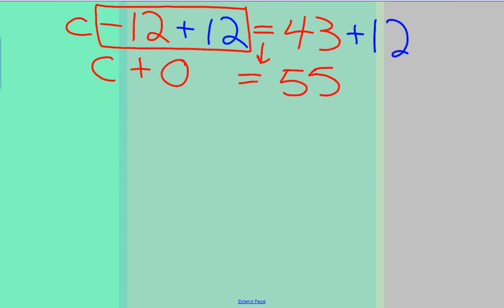Now, what property allows me to go from this step to here? Does anybody know? That is correct. The identity property of addition. So I am going to say that C is equal to 55.